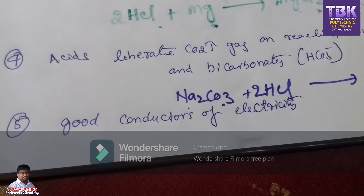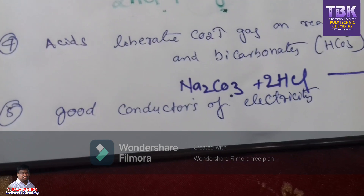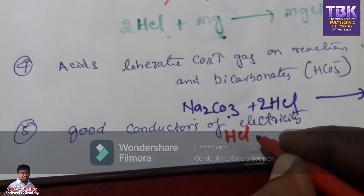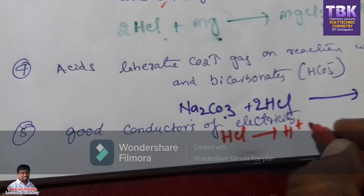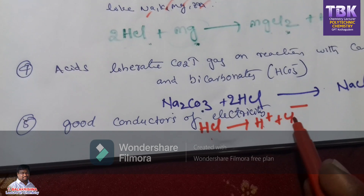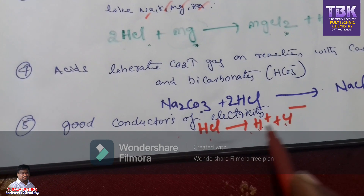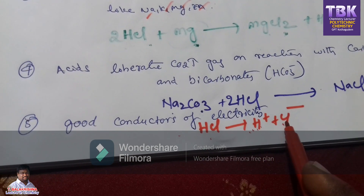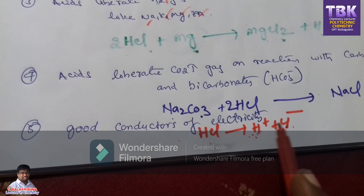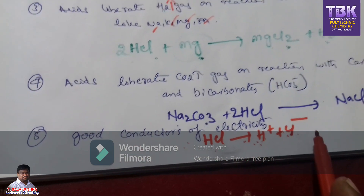Fifth point: acids are good electricity conductors because they have ions. For example, HCl splits into H⁺ ions and Cl⁻ ions. This acts as a good electricity conductor because they have ions — they carry electricity from one place to another. All acids have ions, so they act as good electricity conductors.